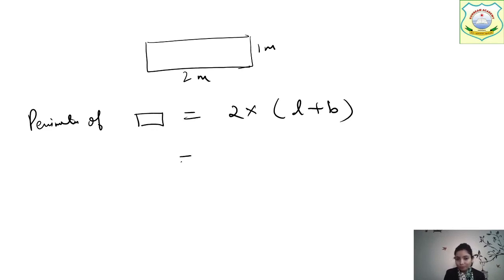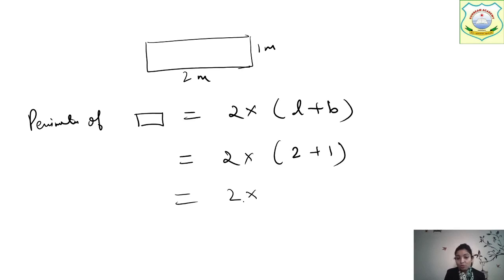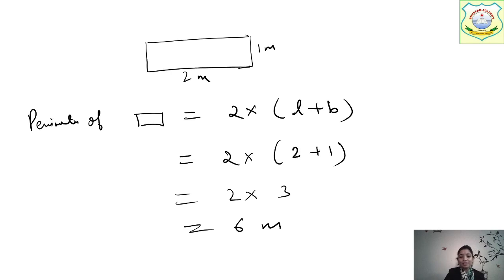So that is 2 × (2 + 1) = 2 × 3 = 6 metres. If you get 6 metres as an option, then it is correct. You can see the options: 2 metres, 3 metres, 6 metres — yes, 6 metres is the correct option.